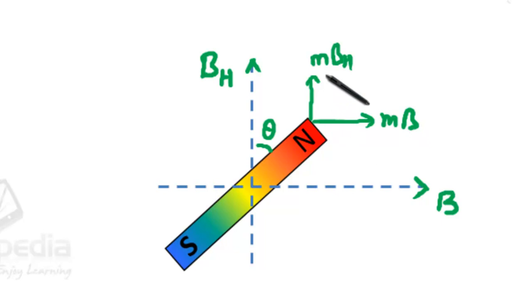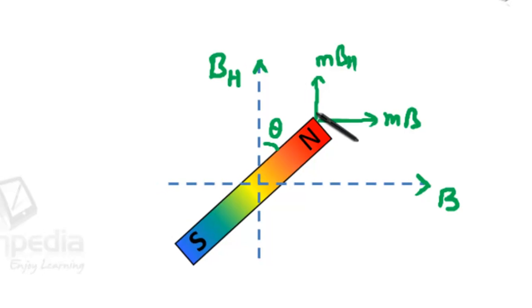So in equilibrium, M BH sin theta should be equal to M B sin 90 minus theta, or B by BH is equal to tan theta. This is called Tangent Law in Magnetism.